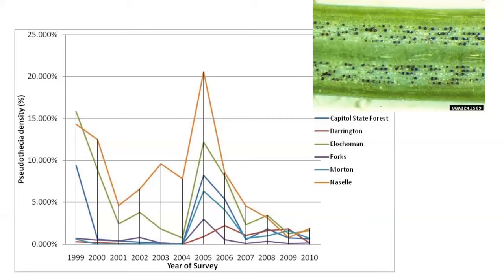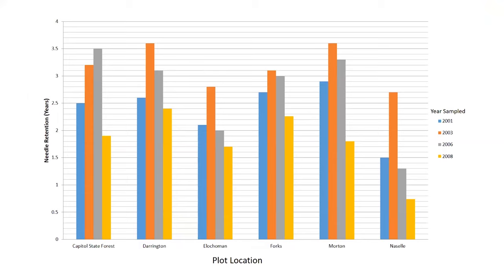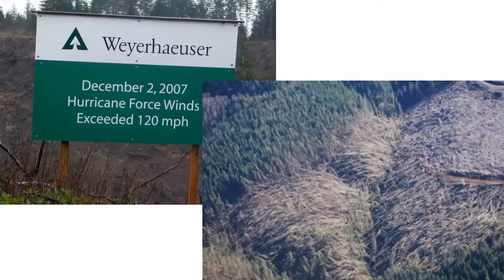Data collected from these same plots showing foliar retention — measured over four time periods — indicated that most trees were holding on to at least two cohorts worth of needles most of the time. Until 2008, when there was a rather precipitous reduction in needle retention. Those who were around at the time may remember we experienced an extratropical cyclone that marched up the coast and struck Washington in December. Unfortunately, many of our trees and plots were damaged by this storm, so we stopped measuring and following those particular trees.